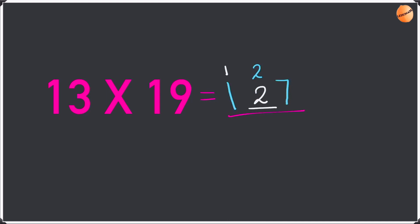Now adding these numbers up: 7 plus nothing is 7, 2 plus 2 is 4, 1 plus 1 is 2. So the answer is 247.